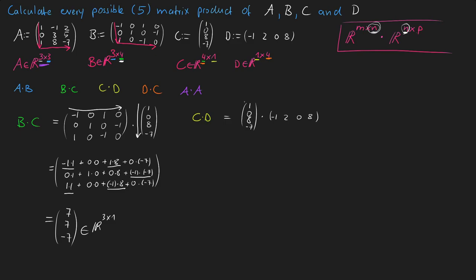For C×D, since C has only 1 column and D has only 1 row, each entry of C simply scales D. The first row is 1×D: (1×−1, 1×2, 1×0, 1×8) = (−1, 2, 0, 8). The second row multiplies by 0, giving (0, 0, 0, 0). The third row multiplies by 8: (−8, 16, 0, 64). The fourth row multiplies by −7: (7, −14, 0, −56). The result C×D has 4 rows and 4 columns.